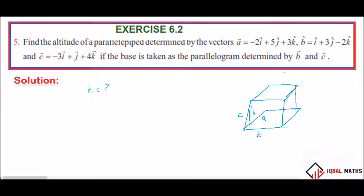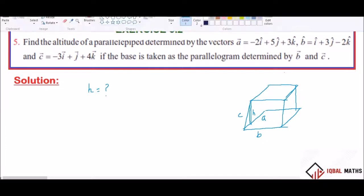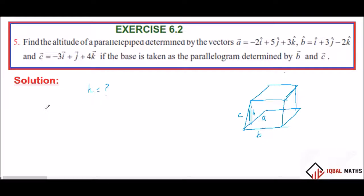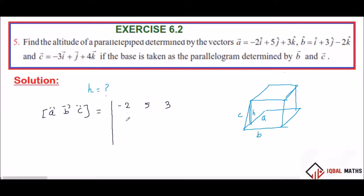So, first we have volume. First we have a, b, c. A vector, b vector, c vector is equal to the determinant: first row A: minus 2, 5, 3; second row: 1, 3, minus 2; third row: minus 3, 1, 4.